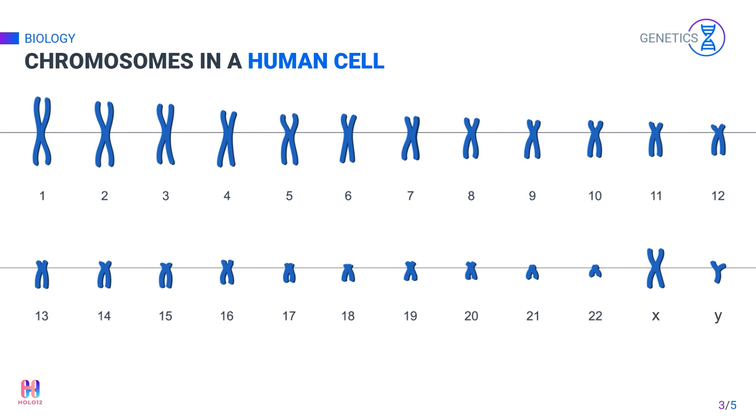Two sets of 23 chromosomes make the total number of chromosomes in all the cells except the gamete cells 46. The gamete cells have 23 chromosomes.